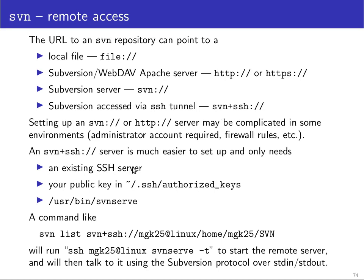You add your public key to your ~/.ssh/authorized_keys file. Then a command like SVN LS with that URL will open an SSH connection to that user on that machine and start the command /usr/bin/svnserve -t in tunnel mode, which means the SVN server speaks the SVN protocol via standard input and standard output.